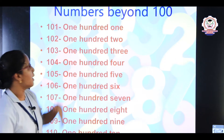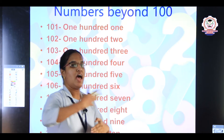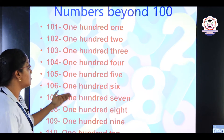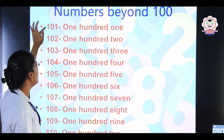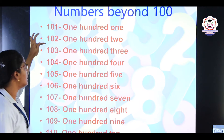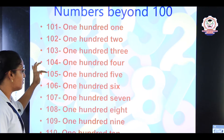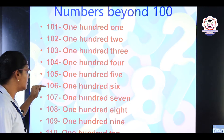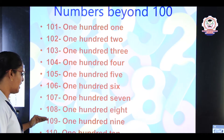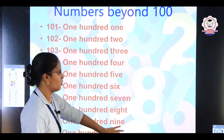Numbers beyond 100 means the numbers that come after 100. These are all the numbers that come after 100, from 101 onwards: 101, 102, 103, 104, 105, 106, 107, 108, 109, 110, and it goes on.